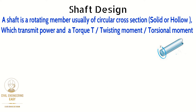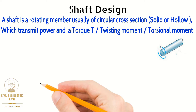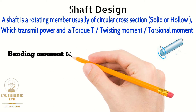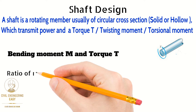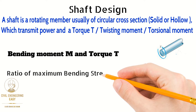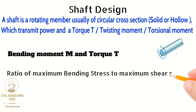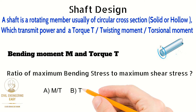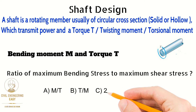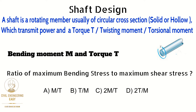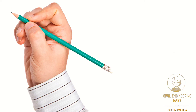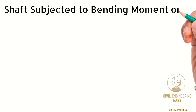Let's try to understand the numerical first. A shaft is subjected to a bending moment M and a torque T, that is a twisting moment or torsional moment. It is required to find out the ratio of the maximum bending stress to maximum shear stress developed in a shaft. The options given are: A is M/T, B is T/M, C is 2M/T, and D is 2T/M.